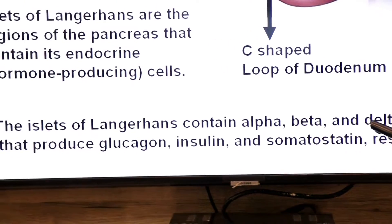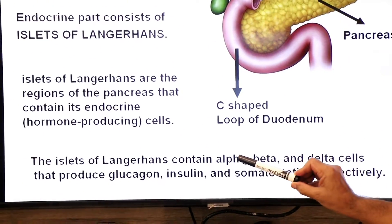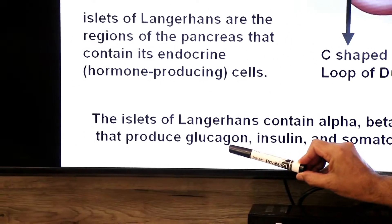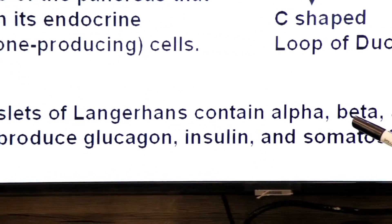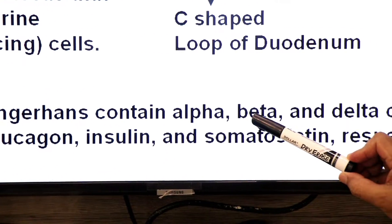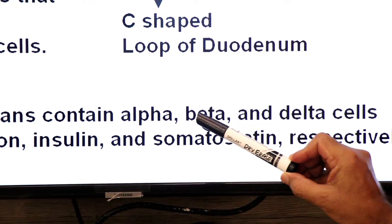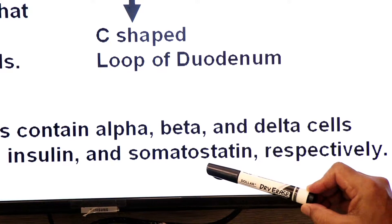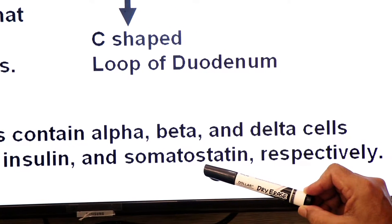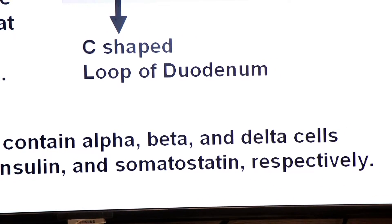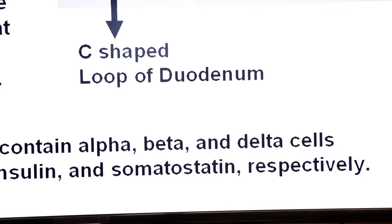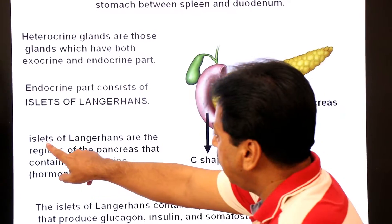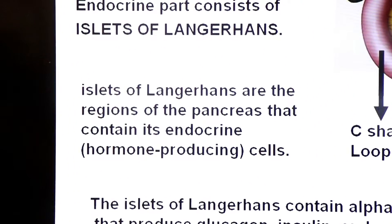These hormone-producing cells are: alpha cells of pancreas produce glucagon, beta cells of Islets of Langerhans produce insulin, and delta cells produce somatostatin hormone respectively. Ab hum in hormones ka function padhenge aur Islets of Langerhans ka diagram dekhenge.